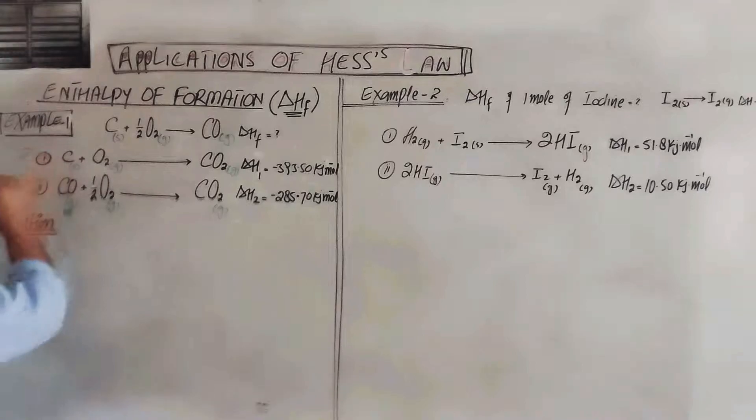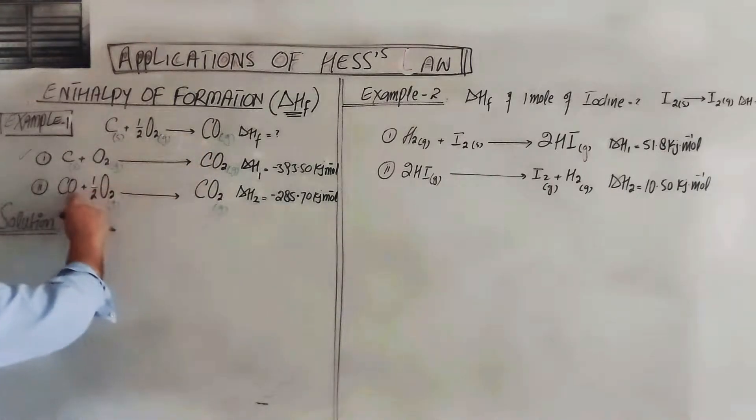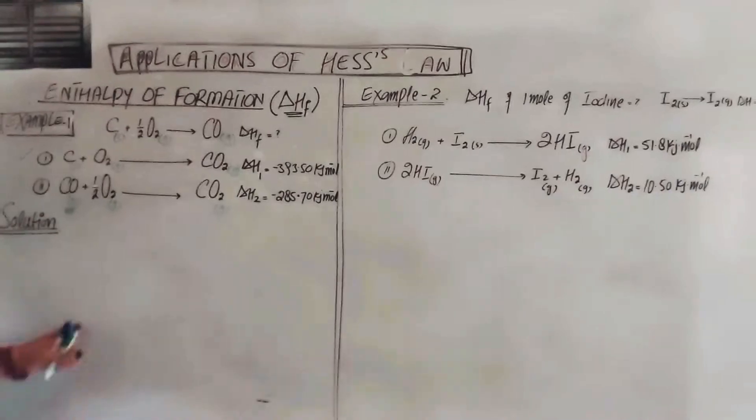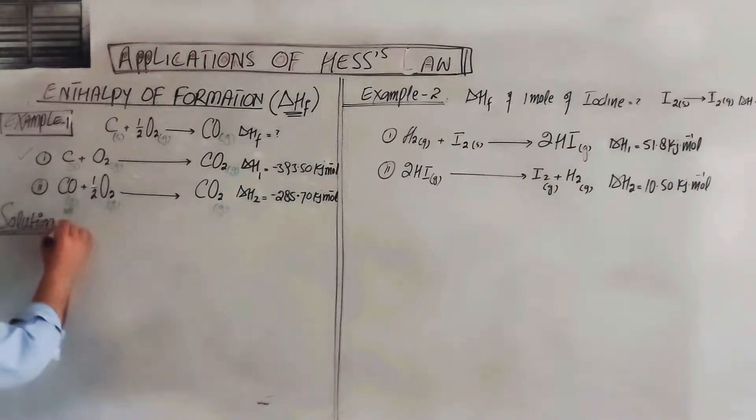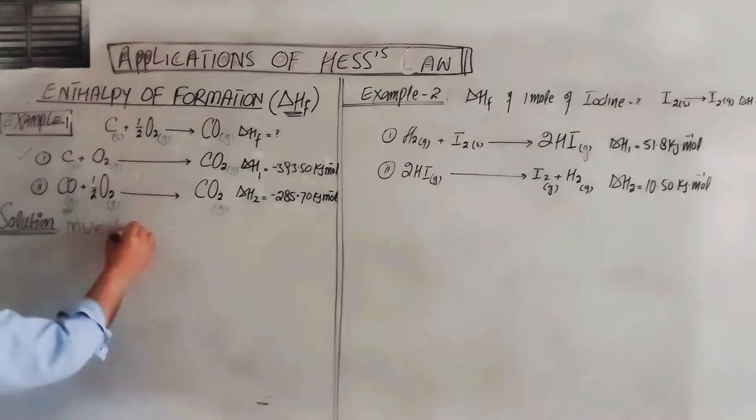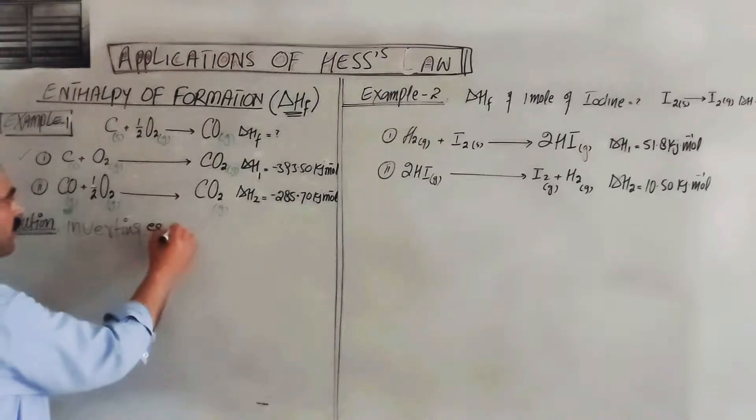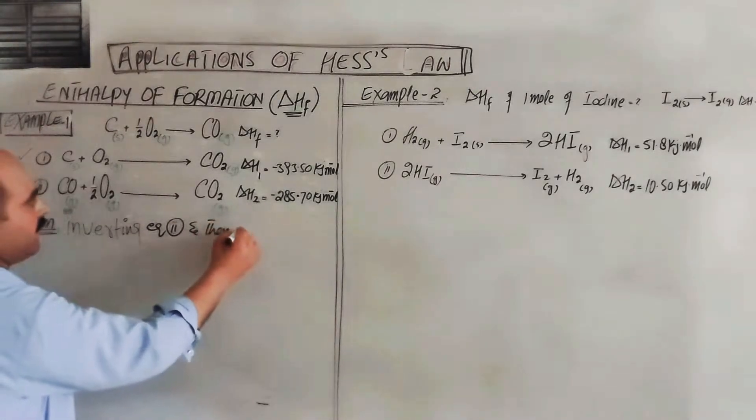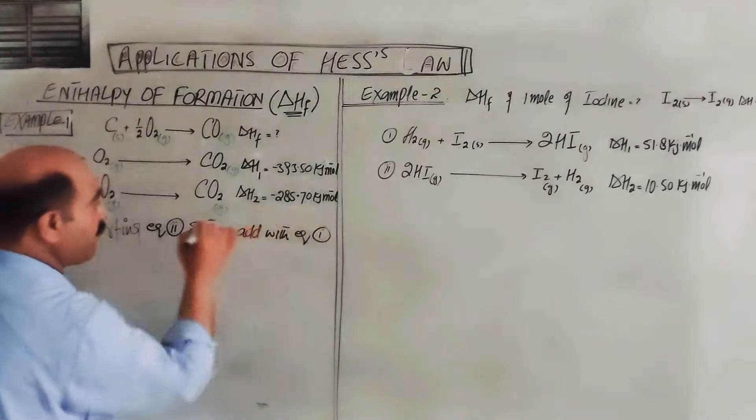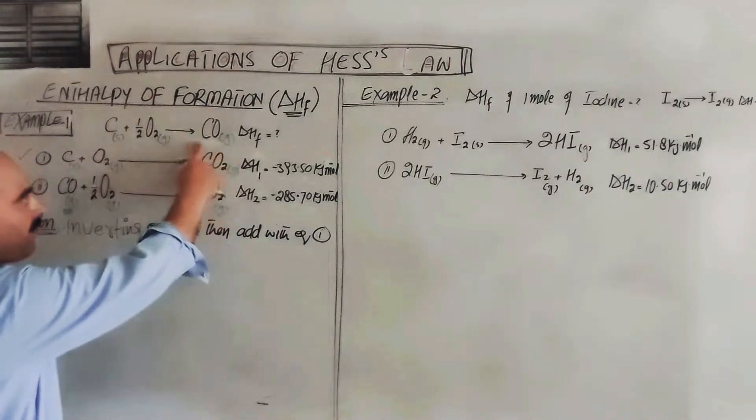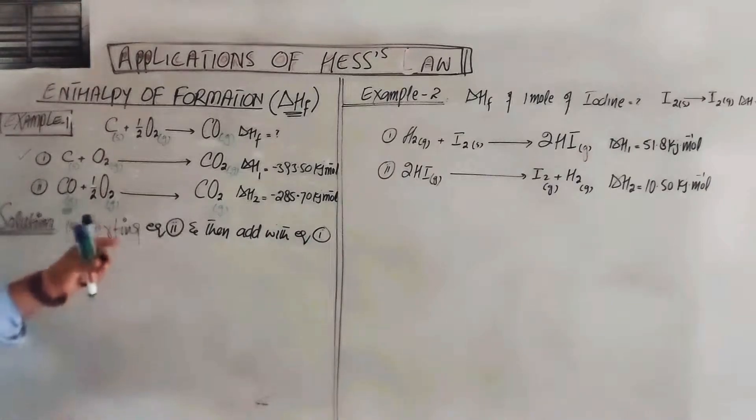Carbon should be on the left side - we already have it there. This is okay. Carbon monoxide should be on the right side - we already have it there. But we need to invert equation number two. We will invert, or reverse, equation two and then add it with equation one. Then we will obtain carbon monoxide formation and we can determine enthalpy of formation.